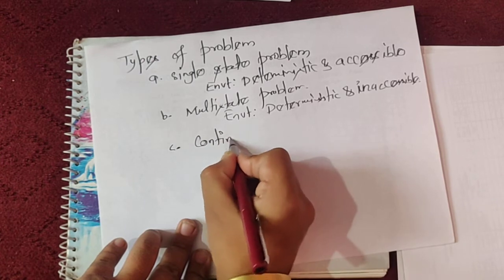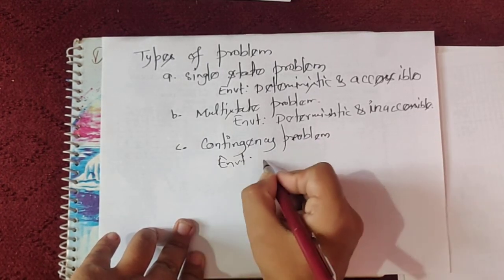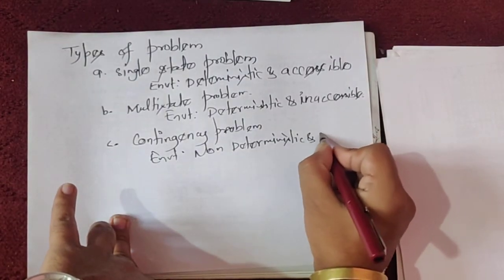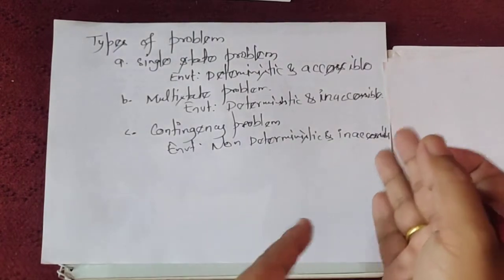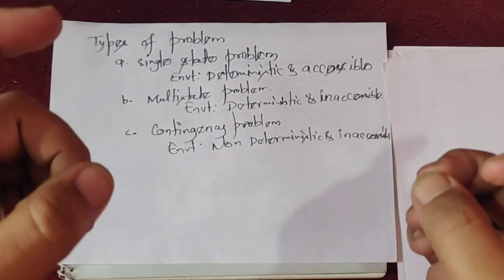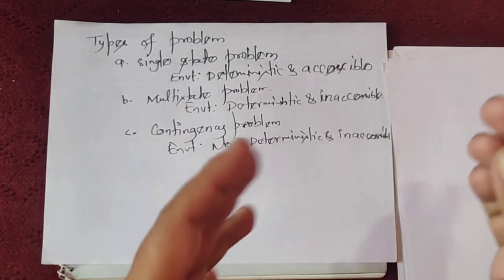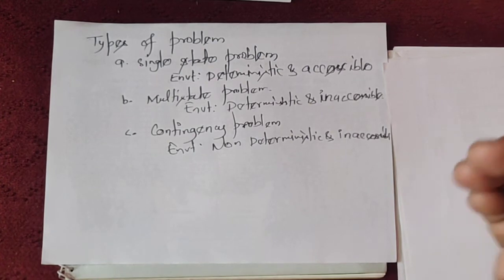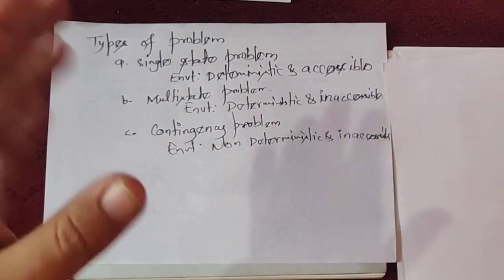The third type is the contingency problem. For this, the environment is non-deterministic and inaccessible. The agent has to use sensors during execution, and the solution is in tree form, with policy often interleaved with search execution. For example, when a new skater is placed in a new arena, they do not know about the arena — that is called a contingency problem.